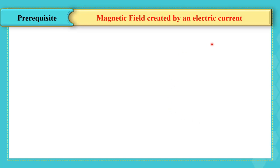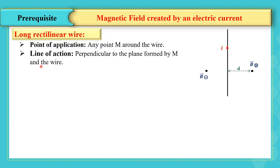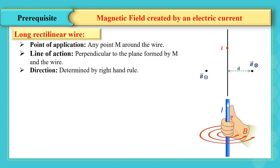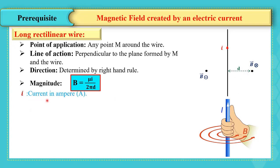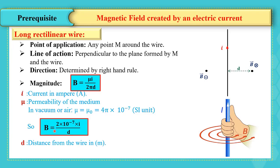In the case of a long linear wire, the magnetic field created at a point M around this wire has a line of action perpendicular to the plane formed by point M and the wire, while its direction is determined using the right-hand rule — the thumb takes the direction of the current. The magnitude is B = μI / (2πD), where I is the current in amperes, μ is the permeability of the medium. In vacuum or air, μ = μ₀ = 4π × 10⁻⁷, so B = 2 × 10⁻⁷ × I / D, where D is the distance from the wire in meters.